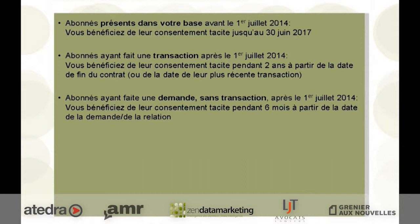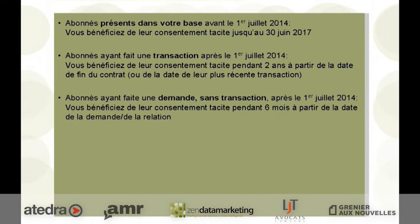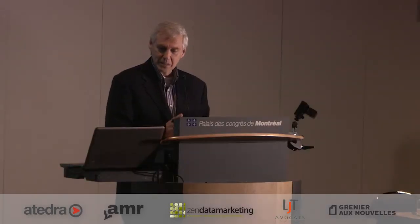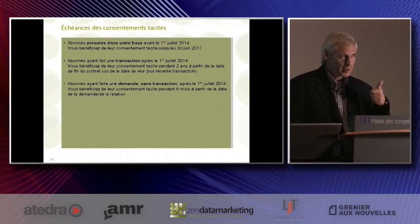L'échéance des consentements tacites : les abonnés présents dans votre base avant le 1er juillet 2014 — donc avant le 1er juillet 2014, on a une ou des bases de données avec des consentements tacites — jusqu'au 30 juin 2017. Les abonnés en fin de transaction après le 1er juillet 2014 : vous bénéficiez de leur consentement pendant deux ans à partir de la date de fin du contrat ou de la date la plus récente de la transaction. Si j'ai acheté quelque chose, j'ai deux ans pour communiquer. Les abonnés en fin de demande sans transaction après le 1er juillet 2014 — par exemple, j'appelle un musée ou un théâtre pour avoir de l'information — c'est un consentement tacite durant six mois. Donc : demande d'information six mois, achat deux ans.